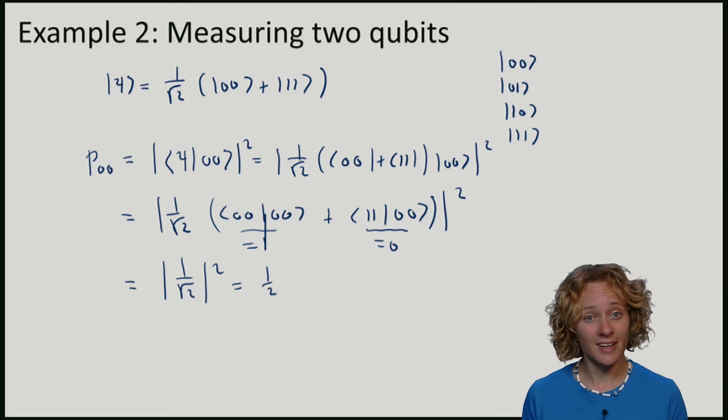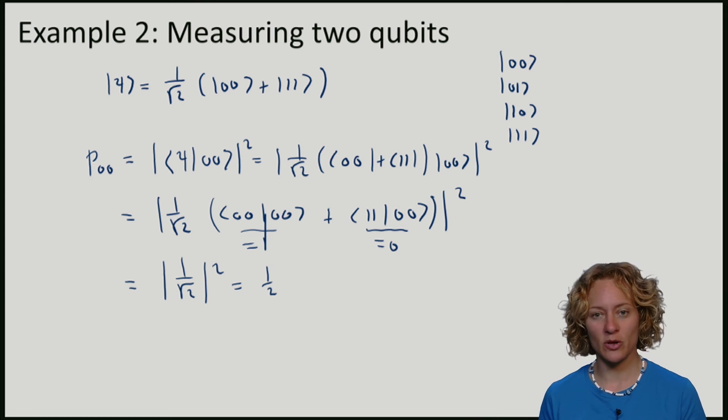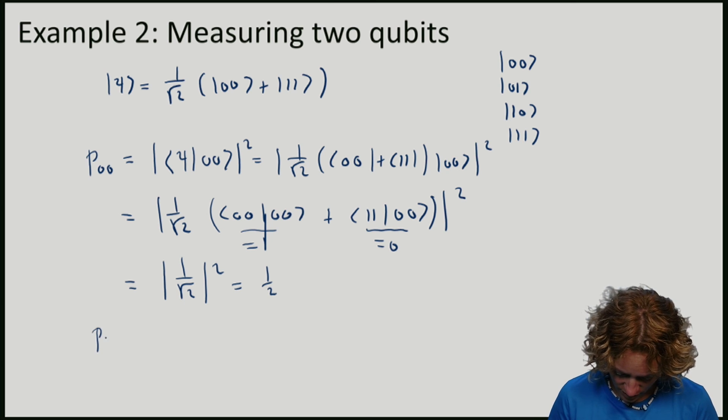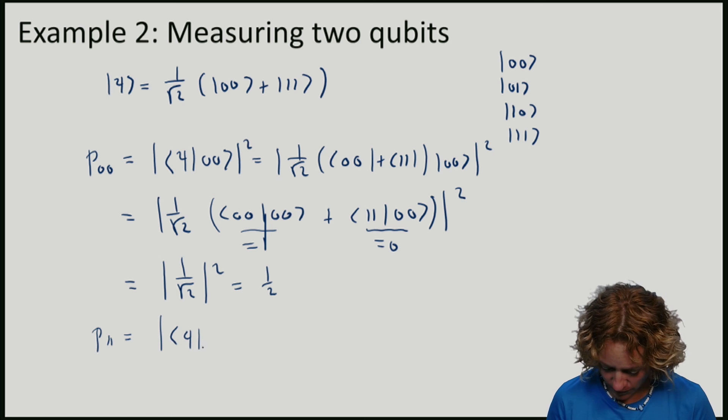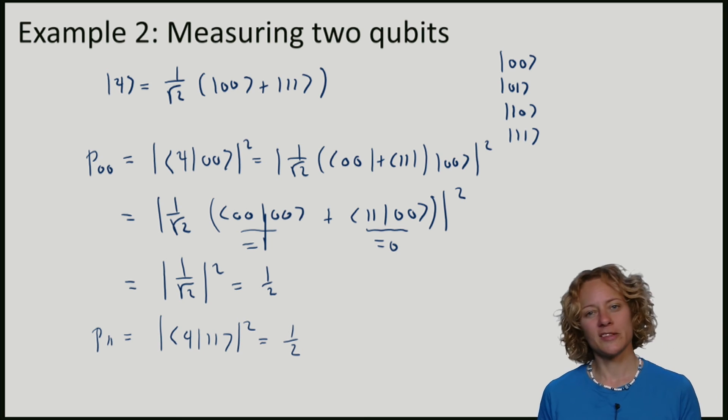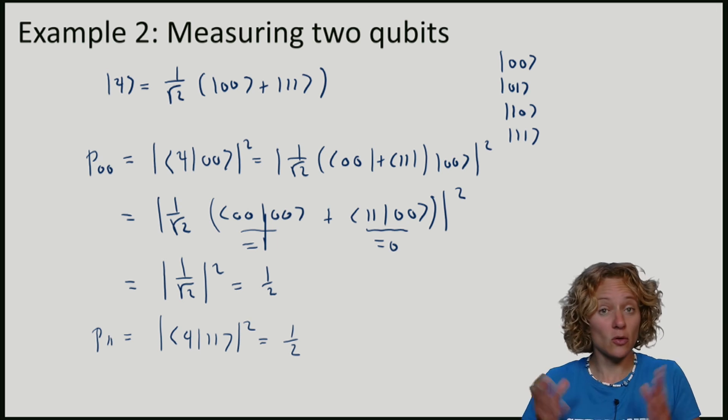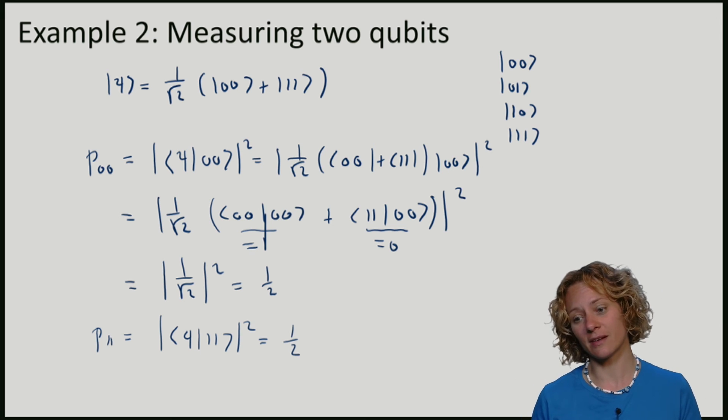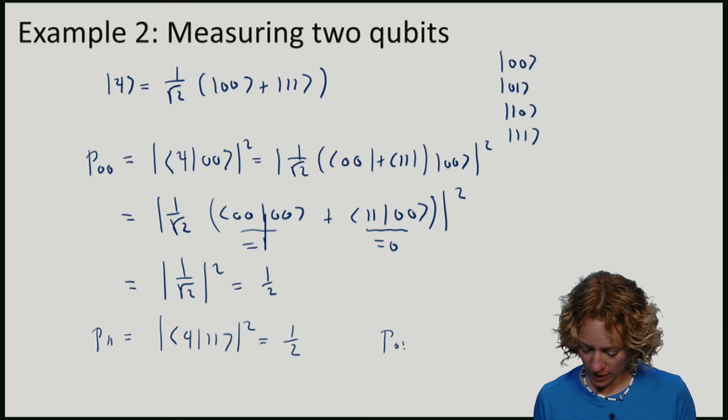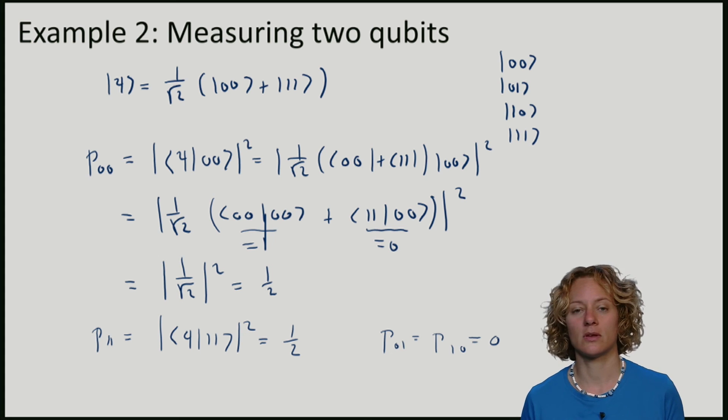A similar calculation shows us that the probability of obtaining outcome one one, which is given by the inner product between Psi and one one, is again a half. So we'll see that actually for this state, not all elements of the standard basis are actually possible to occur as outcomes, because we also have that these probabilities must add to zero.